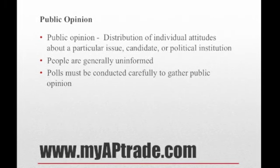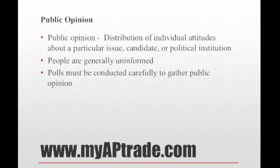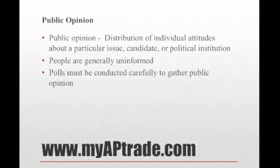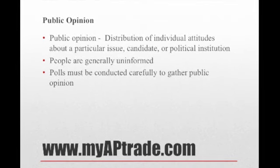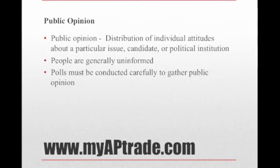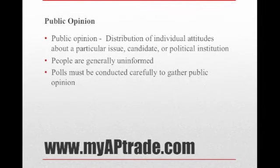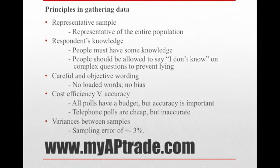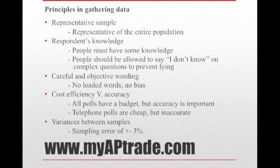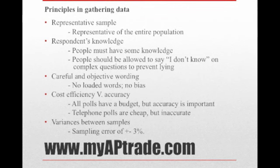Polls generally start when someone wants a political question to be answered — for example, a candidate running for Senate or the House of Representatives might wonder what people in the district really need. They have to be careful with the wording, which should be very exact, because polls can be misleading and people are often uninformed or may provide inaccurate answers. Pollsters therefore follow several important principles when gathering accurate statistics, including: representative sample, respondent's knowledge, careful and objective wording, cost efficiency versus accuracy, and variances between samples.